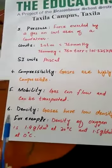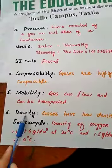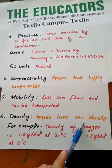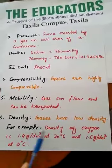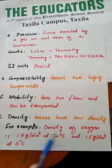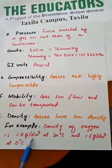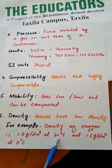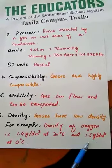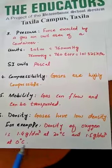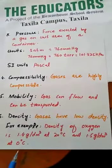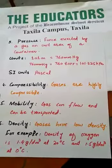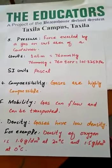The sixth property is density. Gases have low density. For example, the density of oxygen is 1.4 gram per decimeter cube at 20 degree Celsius and 1.5 gram per decimeter cube at 0 degree Celsius. Gases have low density.